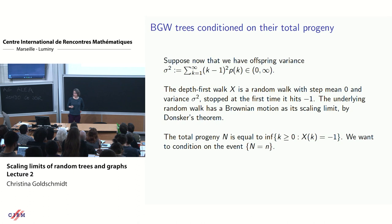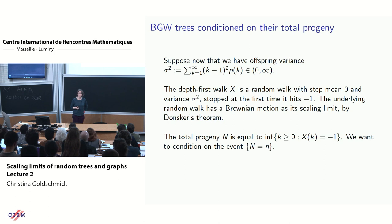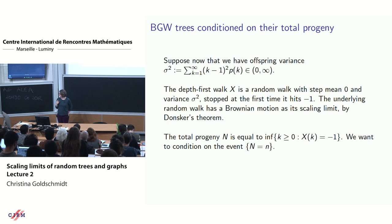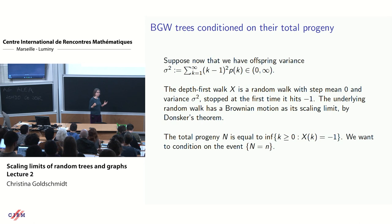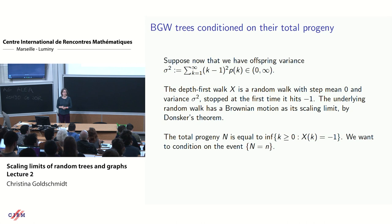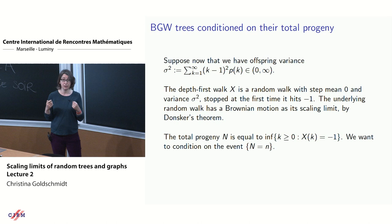Now I want to condition on total progeny n equal to little n. I'll suppose we have finite offspring variance sigma squared, with mean 1. My depth-first walk is now a random walk with zero step mean and finite variance — precisely the setting where, in the unconditioned case, we expect convergence to Brownian motion under correct rescaling, by Donsker's theorem. The total progeny equals the first time the walk hits minus 1.